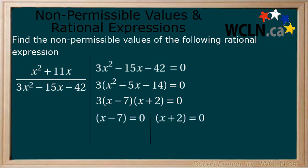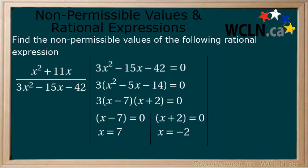Solve for x and we get x equals 7 and x equals negative 2. Therefore, the non-permissible values of the rational expression are negative 2 and 7.